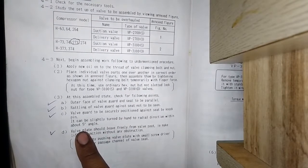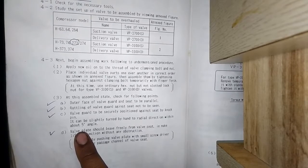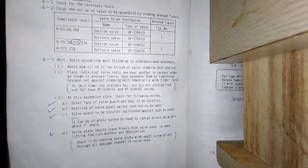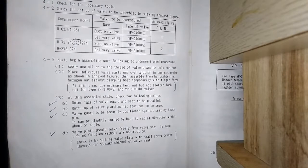I will show you how to check this. Wall guard to be secured in position by the knock pin, which fits in the hole. The wall plate should lift freely from the valve seat, making the lifting function without any obstruction. This will be checked with the help of a screwdriver.